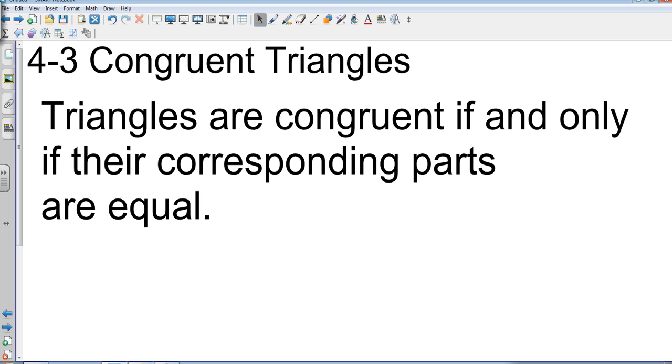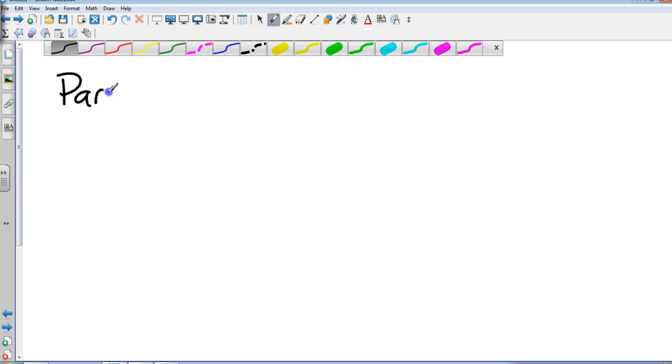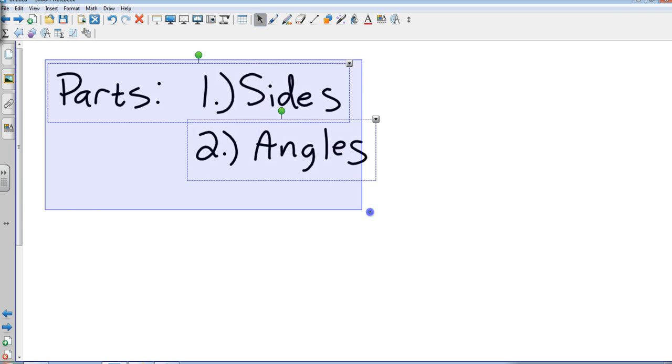Okay, so I'll clean that up just a little bit. Triangles are congruent if and only if their corresponding parts are equal. So we've already studied in the first two sections of Chapter 4 the parts of a triangle. We have the sides and we have the angles. Okay, so the two parts are the sides and the angles.